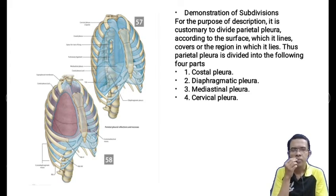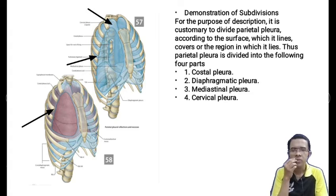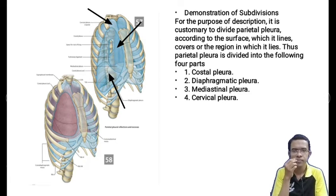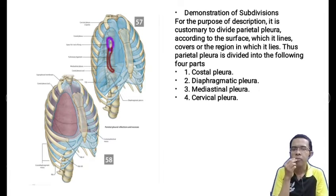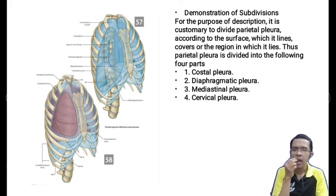The costal pleura lines the thoracic wall; the cervical pleura covers the apex of the lung; the diaphragmatic pleura covers the superior surface of the diaphragm; and the mediastinal pleura is folded up to cover the structures that form the root of the lung. It forms a pedicle that is continuous downward as a bilayered fold called the pulmonary ligament. The pulmonary ligament is a bilaminar fold of the mediastinal pleura that extends below the root of the lung and provides a dead space for the structures of the root, especially for the pulmonary veins.